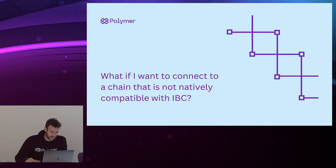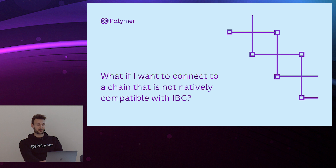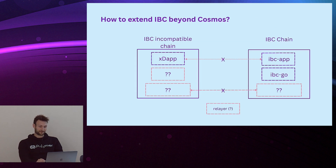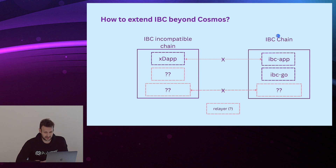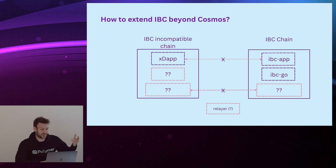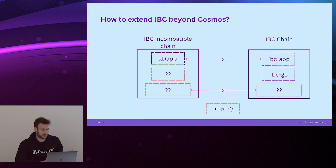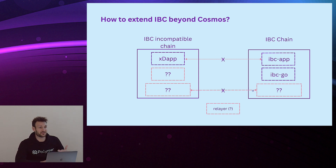Polymer is accelerating IBC adoption. Another thing to think about is: what if I want to connect to a chain that is not natively compatible with IBC? How do we extend IBC beyond Cosmos? In the worst case scenario, we don't have a transport core IBC layer implementation, we don't have a client that can track Tendermint consensus, we don't have a Cosmos SDK light client module that can track the consensus of the IBC-incompatible chain, and there also isn't relay support by default. All of these components in red need to be developed, and that takes time — which slows down IBC adoption.